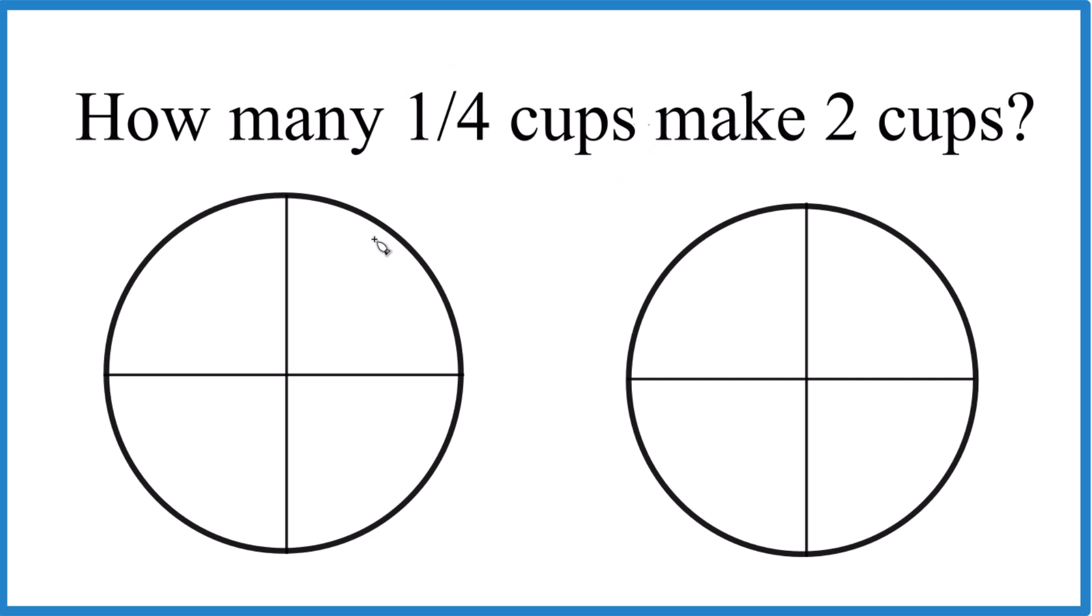The way to think about it is, here's a full cup, and it's made up of these four pieces. So a quarter cup is going to be one piece out of the four. We can just take and put it right there. That's one part of four.